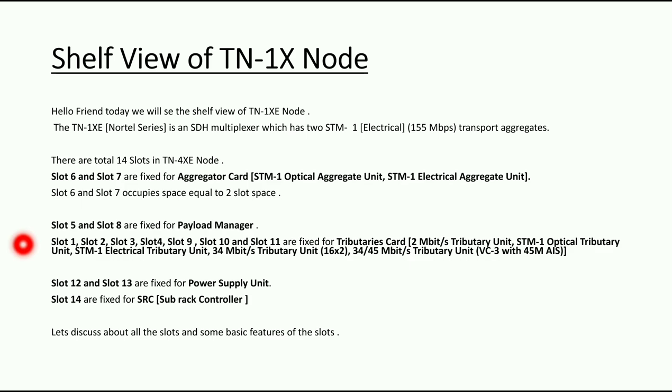You can accumulate 16×2 Mbit/s tributary cards and pass the traffic to the higher level order. Another tributary card is 34/45 Mbit/s. Slot 12 and slot 13 are for the power supply unit. Slot 14 is for the sub-rack controller. Let's discuss the basic features of the slots.